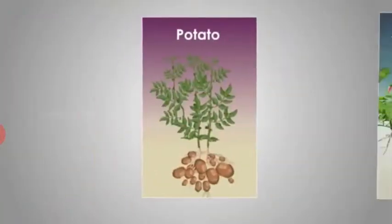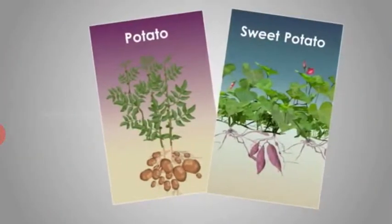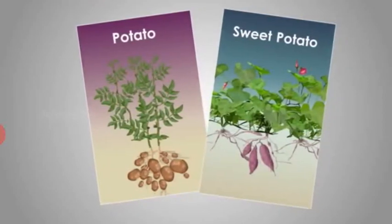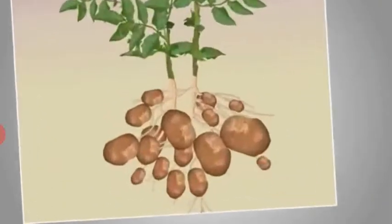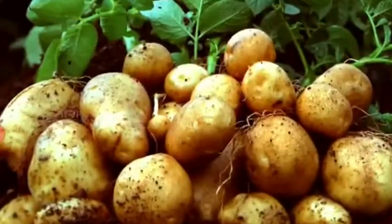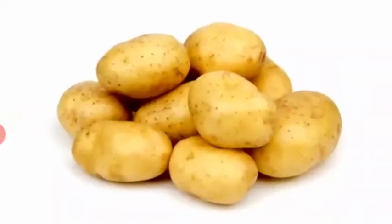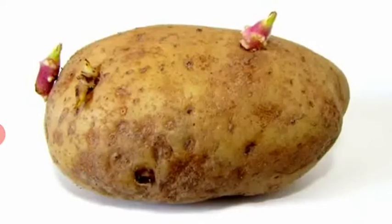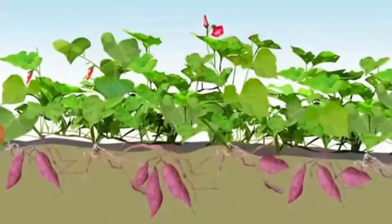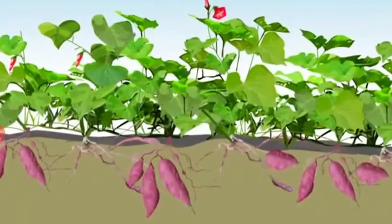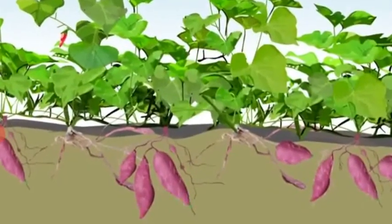In the case of potato and sweet potato, we can observe that they have similar characteristics but different origins. The potato is a modified underground stem which is meant for storage of food. It has eyes which represent nodes. Sweet potato is a modified underground root which is also meant for storage of food. It has root hairs.